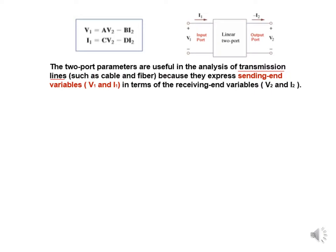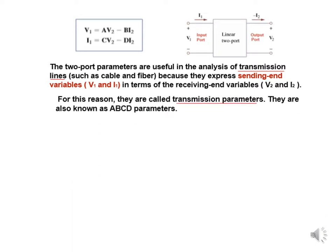Two-port transmission parameters are used in transmission lines such as cables and fibers, and that is why they are called transmission parameters. They express the sending-end variables V1 and I1 in terms of the receiving-end variables V2 and I2. The transmission parameters are also called ABCD parameters.